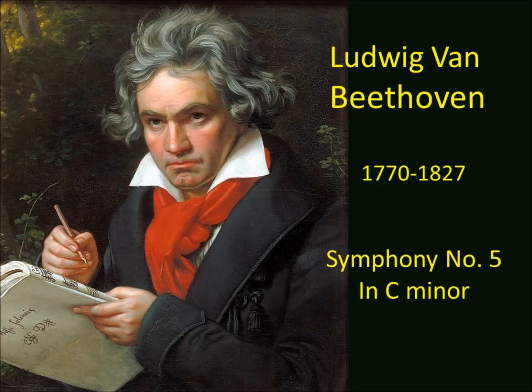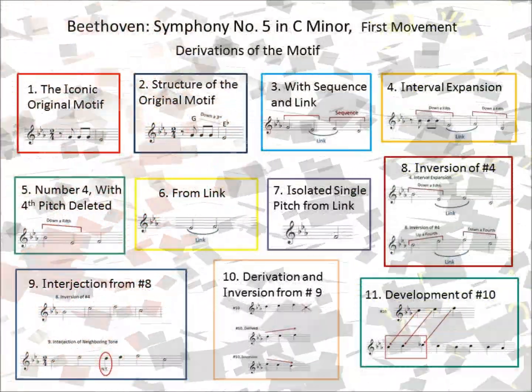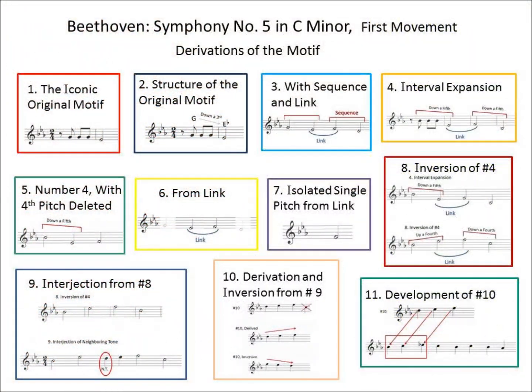Here are a few excerpts from Robert Richard Trevartan's lecture on Beethoven's Fifth Symphony. Mr. Trevartan is showing how everything in the first movement is derived from the original motif.